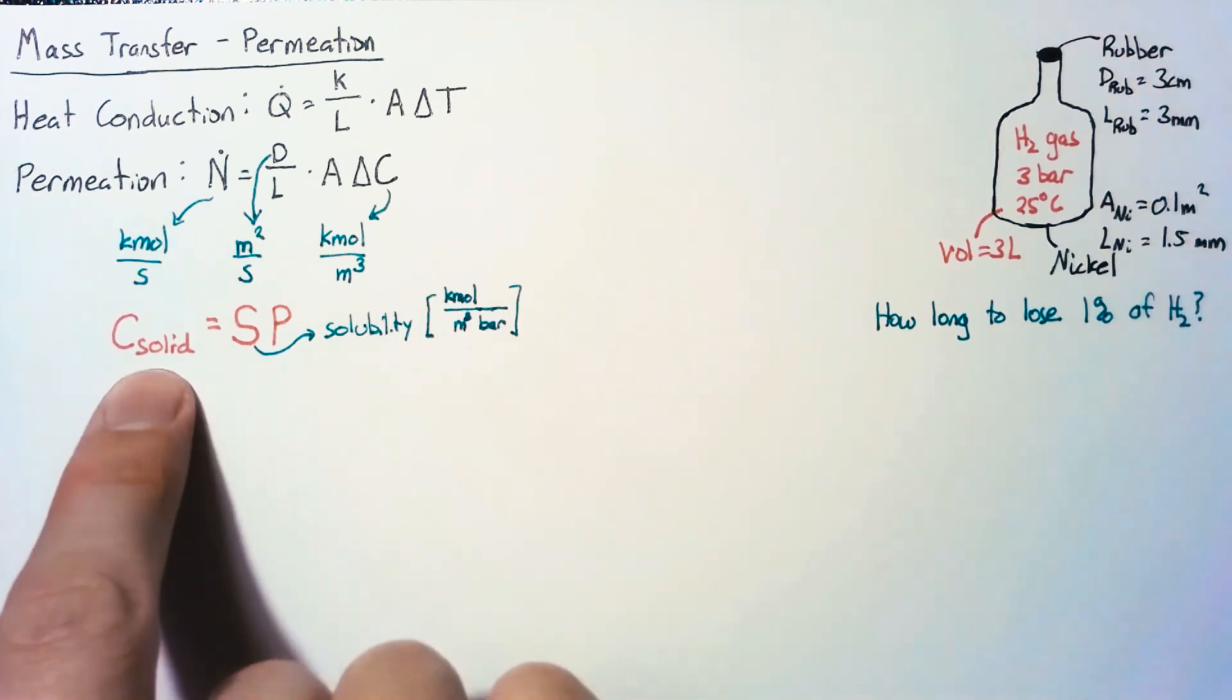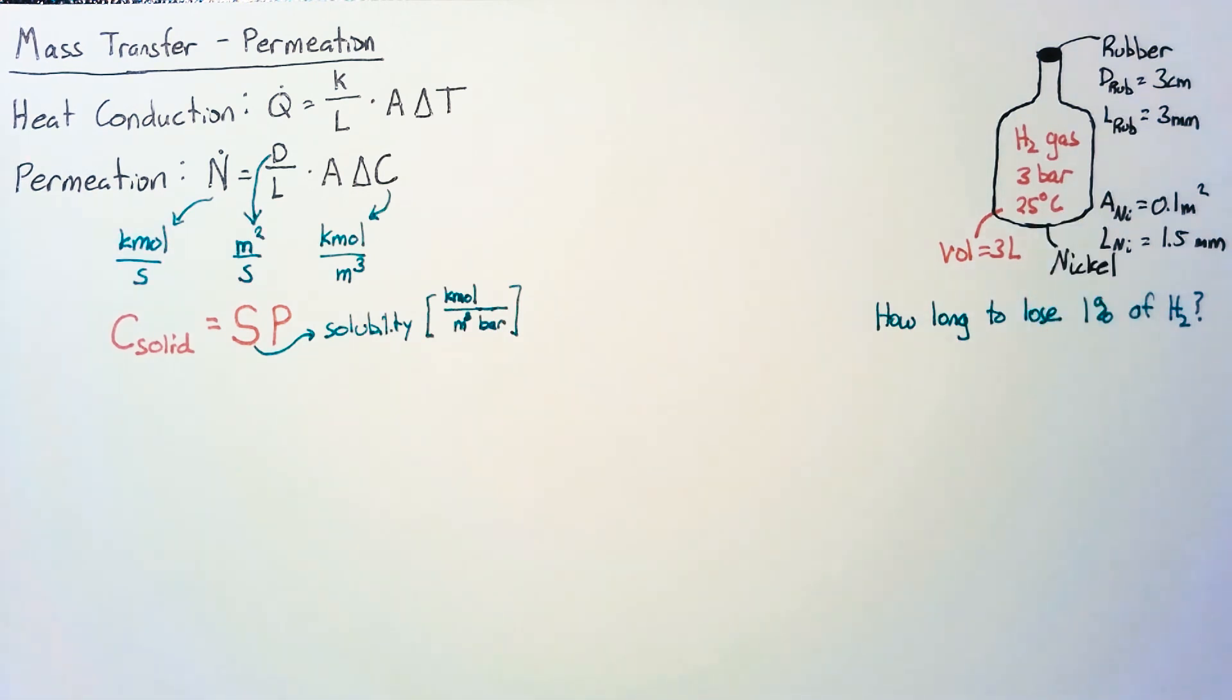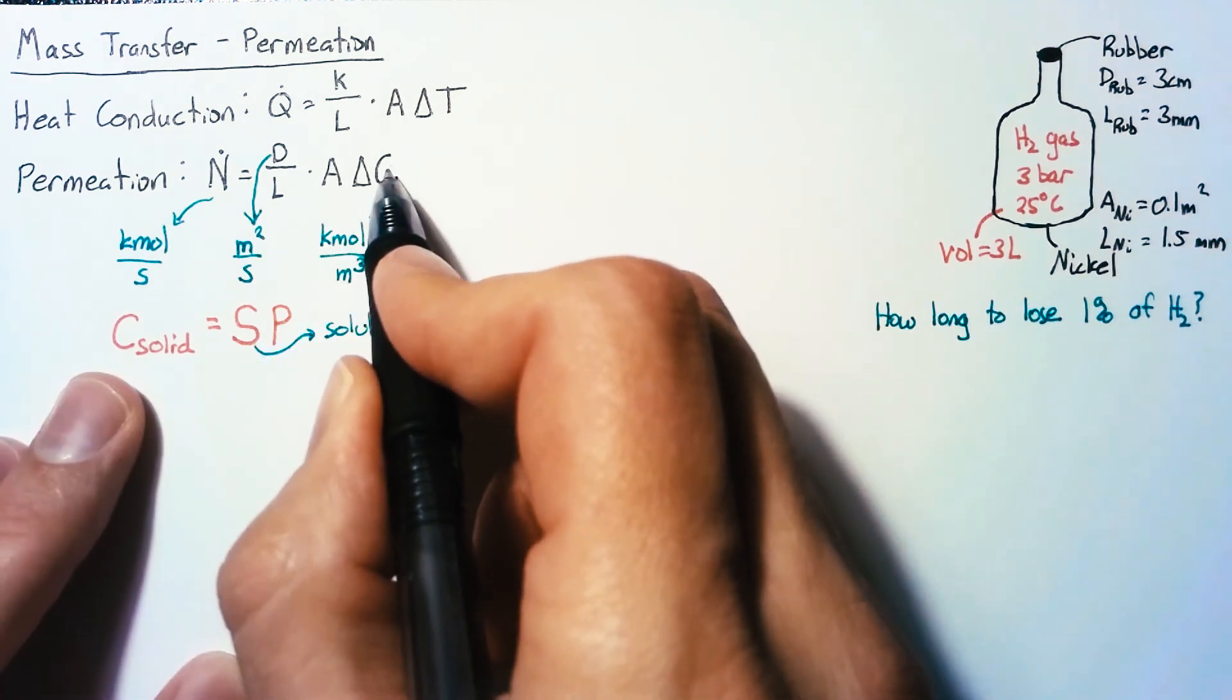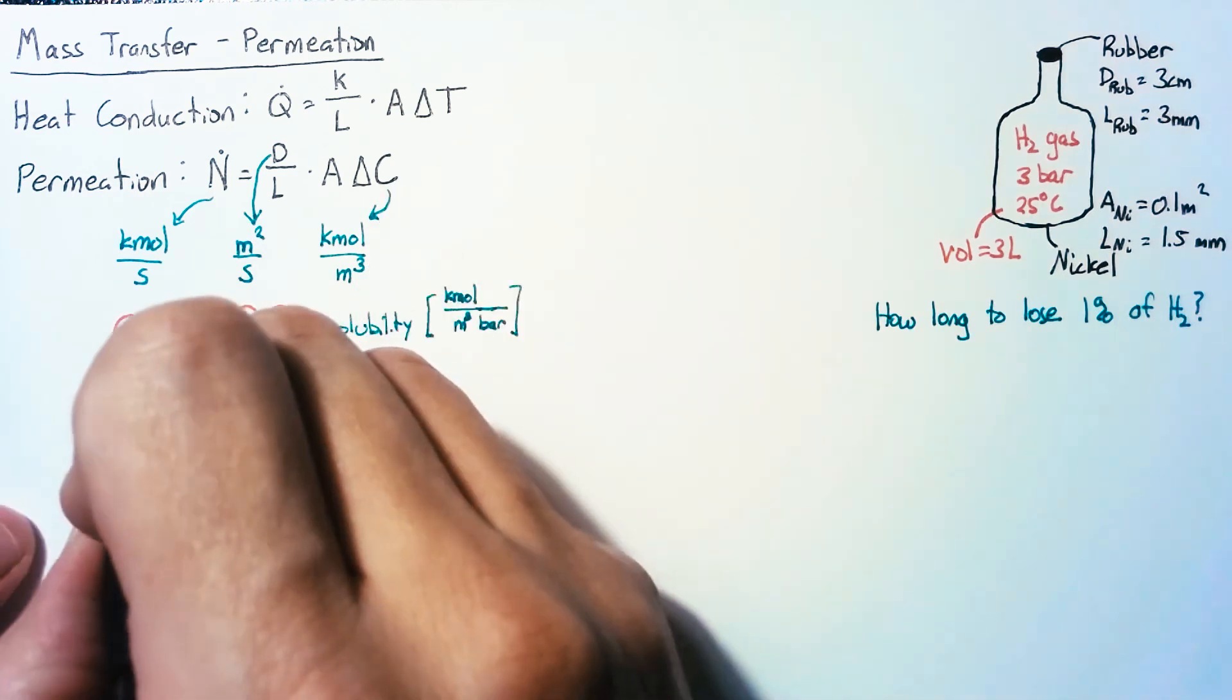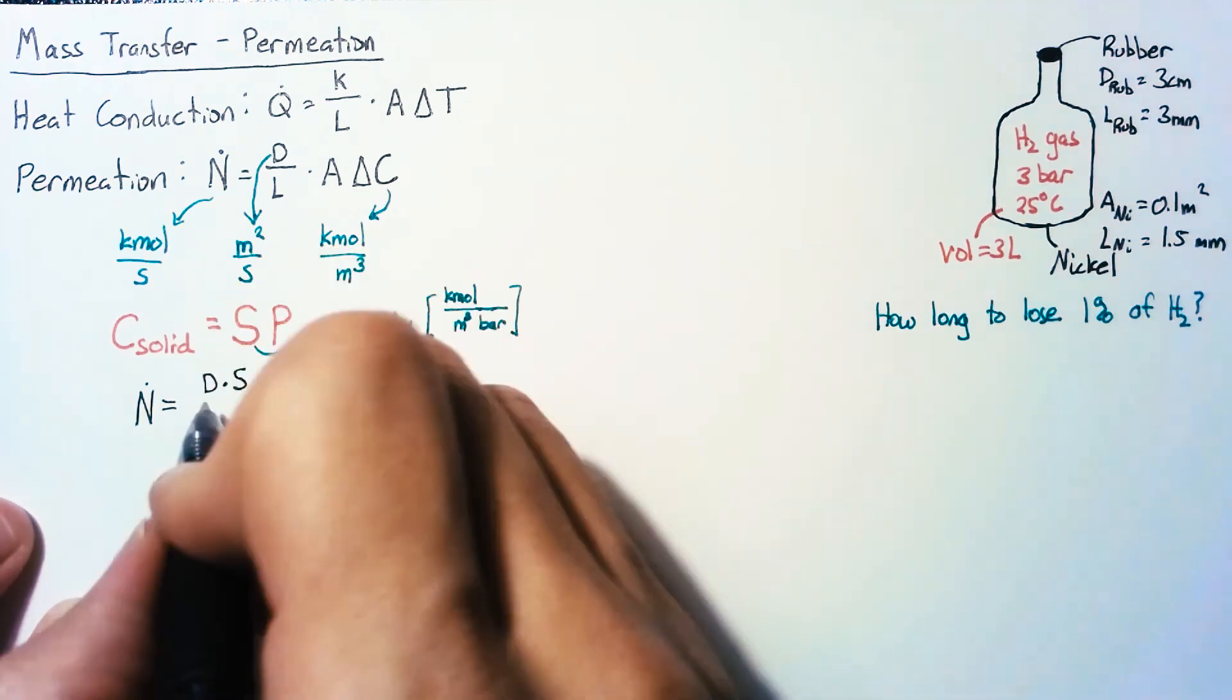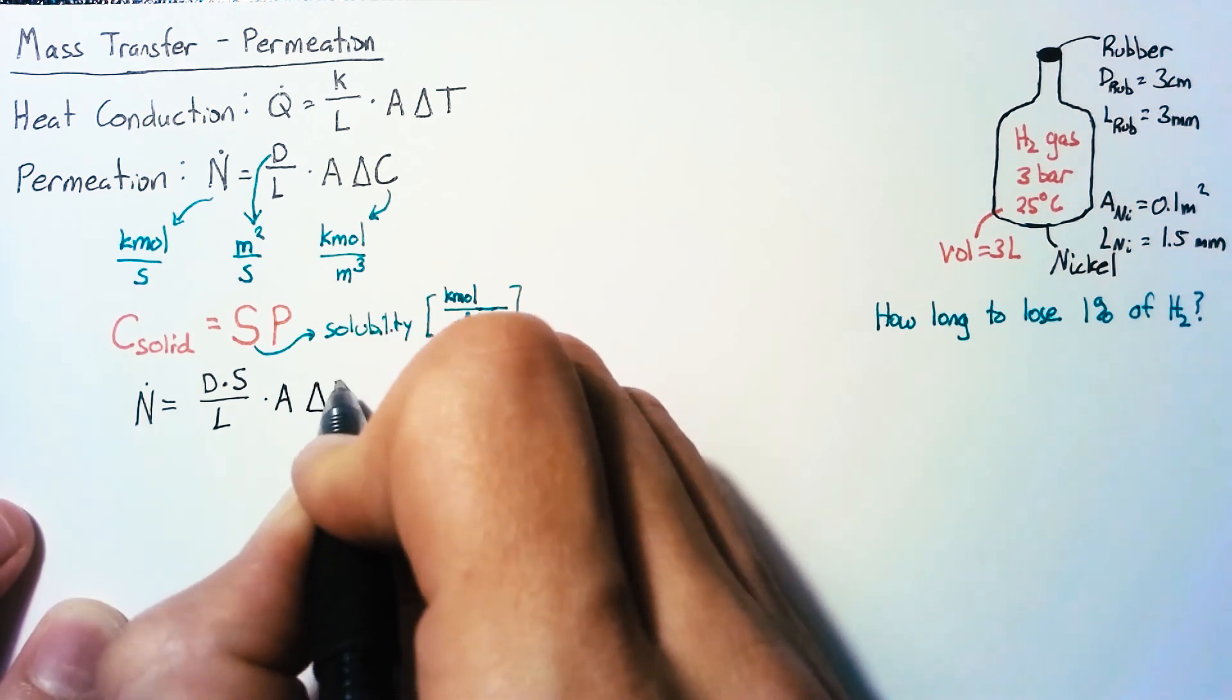This allows us to find the concentration of our hydrogen gas in the solid immediately adjacent to the gas itself. If we use this with our equation, we can split up the concentration into solubility and pressure. We end up with ṅ equals D times solubility divided by length times area times the change in partial pressure ΔP.